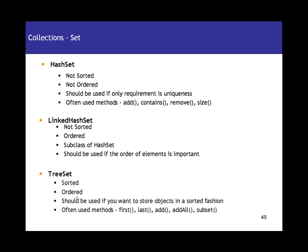Next, sets — sets are lists of unique items. Not all set implementations are ordered. The first is HashSet, which is not ordered and not sorted. It should be used only if the requirement is uniqueness and you have no other complex requirements. Commonly used methods are add, contains, remove, and size.